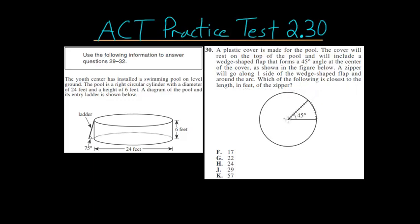You can see the zipper going along the radius of the circle and then along the arc of the circle. We can immediately know how long this length is since it's just the radius of the circle, and we know the diameter of the circle is 24 feet, so the radius would have to be half of that. In other words, this radius here is just 12. So there are 12 feet along this part of the zipper.